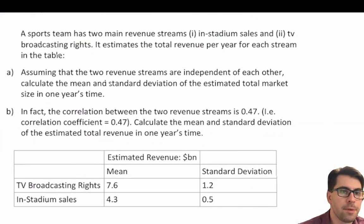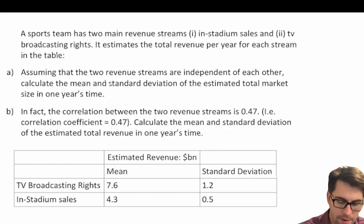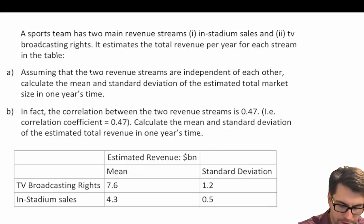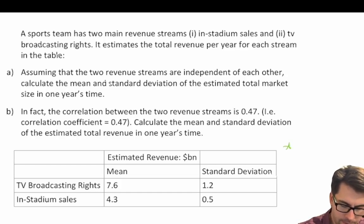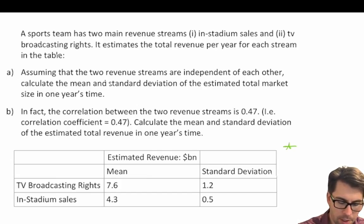A sports team has two main revenue streams: in-stadium sales and TV broadcasting rights. It estimates the total revenue per year for each stream in the table below. Assuming that the two revenue streams are independent of each other, calculate the mean and standard deviation of the estimated total market size in one year's time.